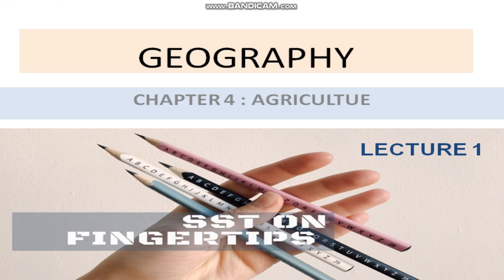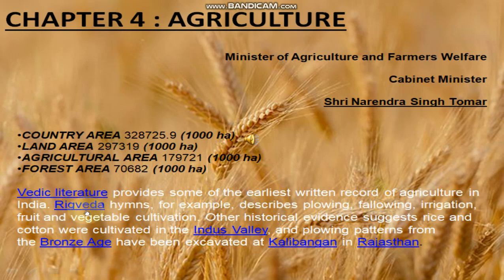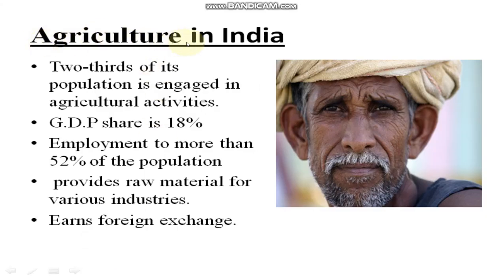Let's move to Chapter 4: Agriculture. Some quick facts — agriculture in India comes under the Minister of Agriculture and Farmers Welfare. The current cabinet minister is Shri Narendra Singh Tomar. India's total area is 3.28 million square kilometers, land area is 2.97 million square kilometers, agricultural area is around 1.79 million square kilometers, and forest area is around 7 lakh square kilometers. Vedic literature provides some of the earliest written records of agriculture in India.